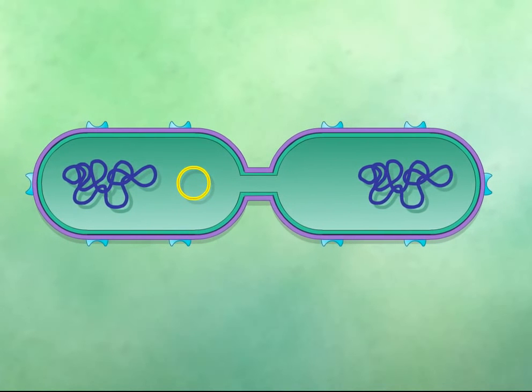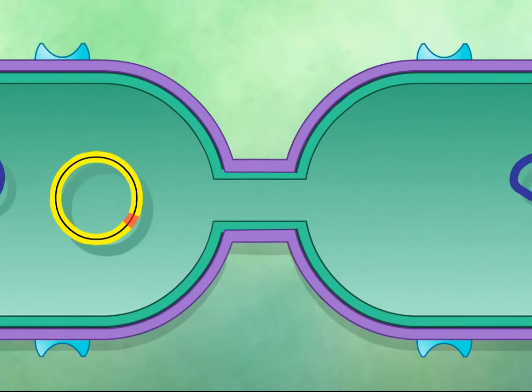The plasmid then becomes mobilized for transfer when a plasmid-encoded endonuclease cleaves one strand of the plasmid at a specific nucleotide sequence called the origin of transfer.